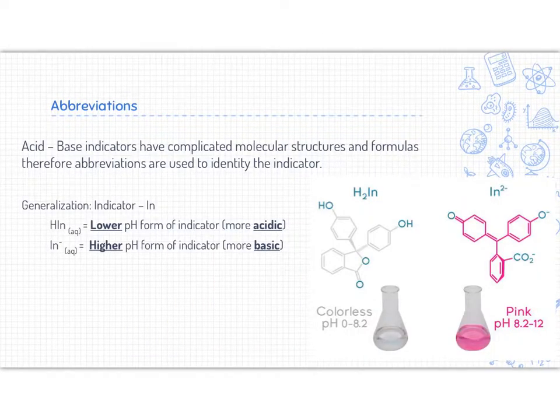Acid-base indicators actually have really complicated molecular structures and formulas, so we use abbreviations to identify them rather than a chemical formula. For instance, we have HIn for the lower pH form of an indicator, and then just the indicator's short form minus for the higher pH form of the indicator, which would be more basic.